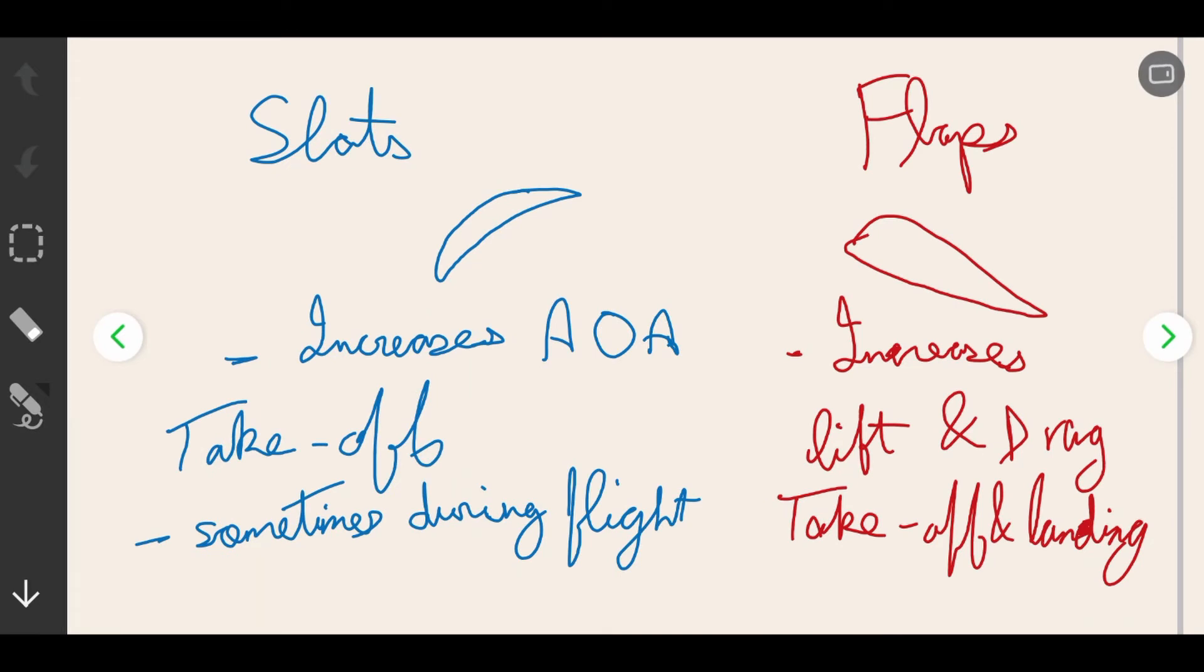They are often used during takeoff and landing, but there are also automated slats which are used during flight, which increases an angle of attack to gain some lift. Slats are mainly used to increase the camber of an airfoil.